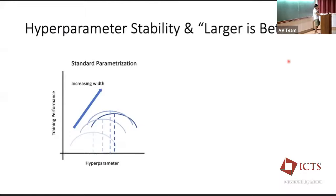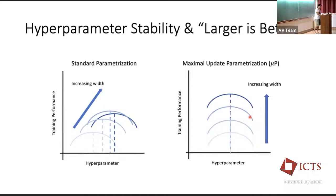This is the negative example of the two properties: hyperparameter stability and larger-is-better. Now, if you look at μP and repeat this experiment, you find a set of curves where the hyperparameters for each curve are stable as you increase the model width. For any point on the x-axis, if you increase the width, you always gain something. This exemplifies hyperparameter stability and the larger-is-better property.